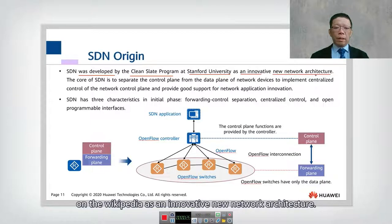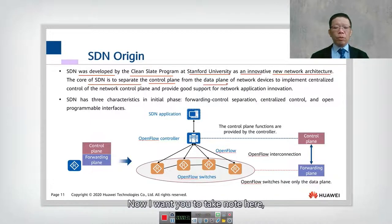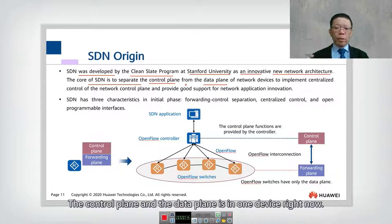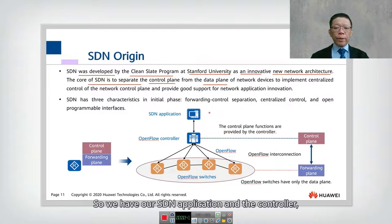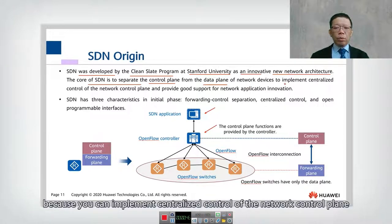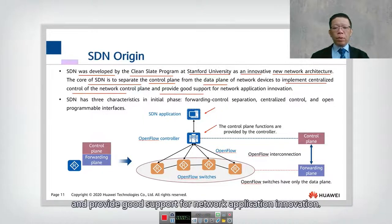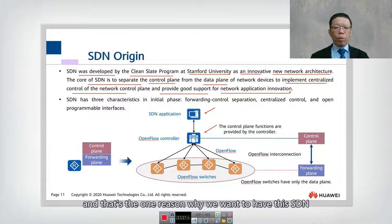As an innovative new network architecture, the core of SDN is to separate the control plane from the data plane. This is very important — the control plane and the data plane are currently in one device, and SDN wants to decouple them. The control plane becomes the controller, along with the SDN application, enabling centralized control of the network and good support for network application innovation.